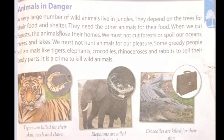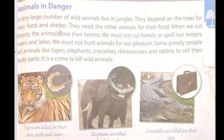Animals in danger: a very large number of wild animals live in jungles. They depend on trees for their food and shelter, and on other animals for food. When we cut forests, animals lose their homes. We must not cut forests or spoil our oceans, rivers and lakes. We must not hunt animals for pleasure. Some greedy people kill animals like tigers, elephants, crocodiles, rhinoceros and rabbits to sell their body parts — it is a crime to kill wild animals.